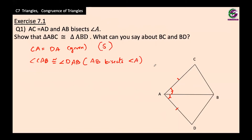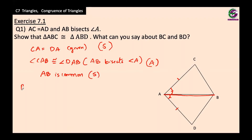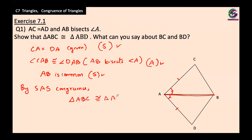We have a side and an angle. Now we need another side. Look at side AB — it is a side of both triangle ABC and triangle ABD, which means AB is common to both. So AB is equal in both triangles. By the SAS congruence rule, triangle ABC is congruent to triangle ABD.